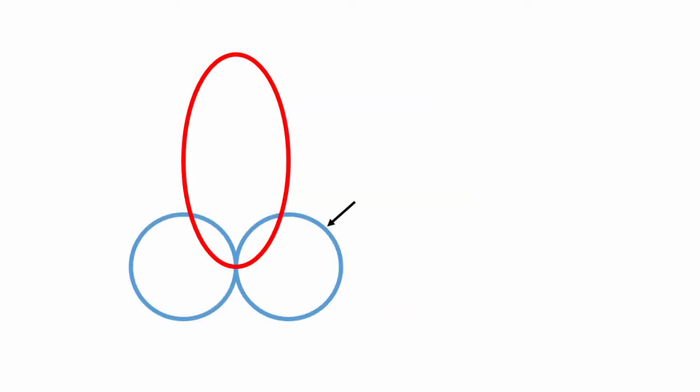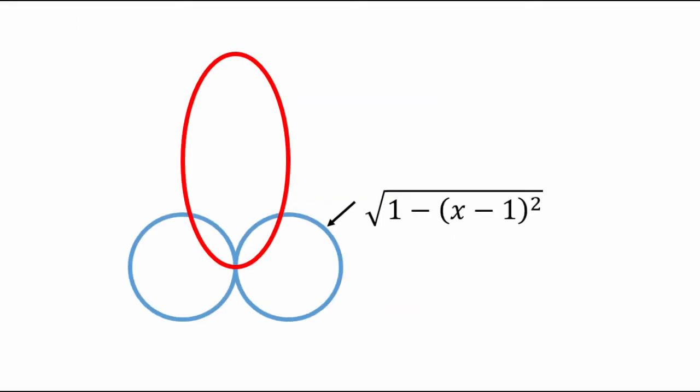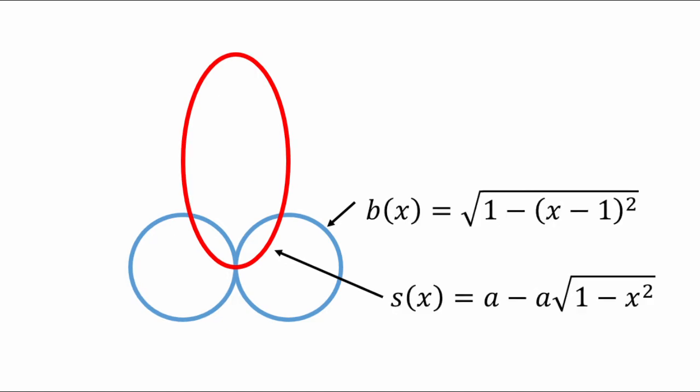Let's say that this blue ball is centered at 1, 0, so the top half has the equation root 1 minus x minus 1 squared. Meanwhile the shaft is centered at 0a, so its bottom half has the representation a minus a times root 1 minus x squared. We'll call the blue ball function b of x and the shaft function s of x.